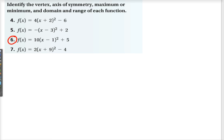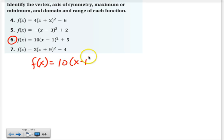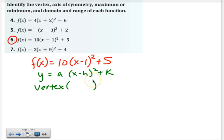Number 6 says that f(x) equals 10 times the quantity x minus 1 squared plus 5. And what you want to do is think of this as our generic equation y equals a times x minus h squared plus k. So identify the vertex. The vertex is always h, k. So in this case, you just want to be careful with your h value because there's already a negative in the formula. That was a 1.